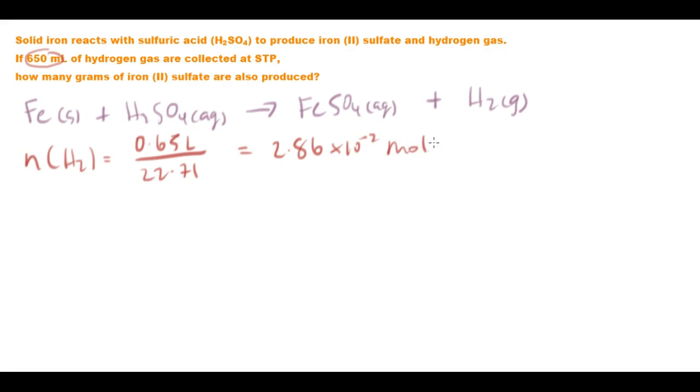Now according to our ratio, according to our actual reaction here, the number of moles - because we want to know eventually the mass of iron sulfate - the number of moles of our iron sulfate is actually the same as the number of moles of hydrogen produced.